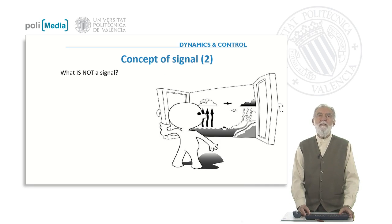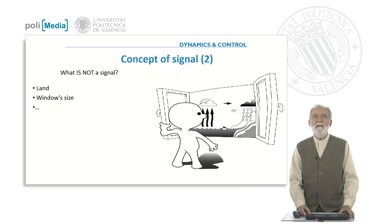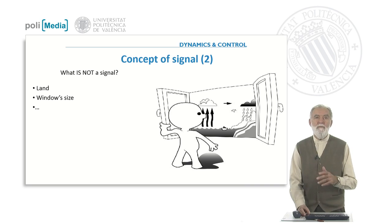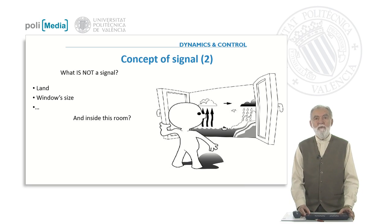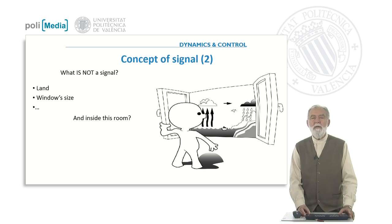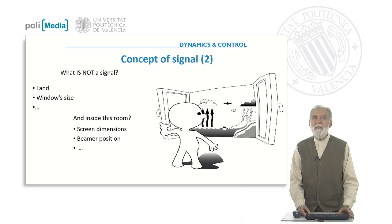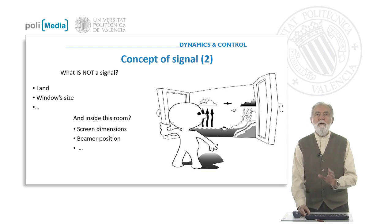On the other hand, what is not a signal? Looking again outside: the land, the mountains, the buildings, the size of the window — this is not a signal because this is fixed, it is constant, it is not changing over the time of your observation. If you look inside the room, what you can say is not a signal — for instance, the dimensions of the screen, the position of the viewer — these are fixed. They are not changing during your period of observation.